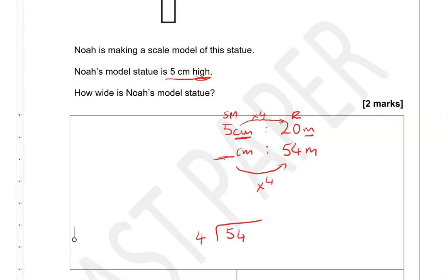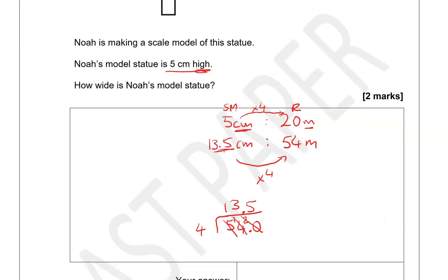So how many 4s would fit into 5? That would be exactly 1. And we have 1 remaining. How many 4s into 14? That would be 3 of them, because 3 times 4 is 12, so we have 2 remaining. Now we've finished with the digits here. We could put a decimal point in both of the numbers. Now we can add as many zeros as we want. So how many 4s into 20? That's 5 and nothing remaining. So 13.5 centimeters. That's the answer.